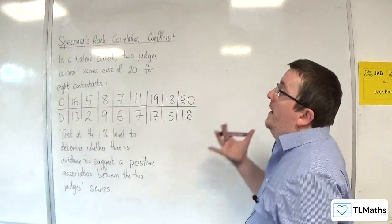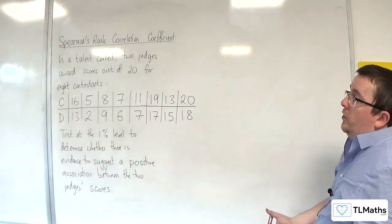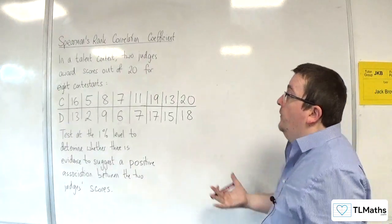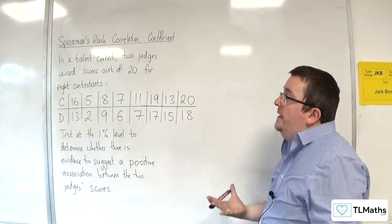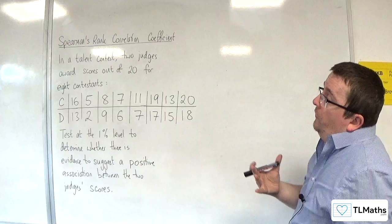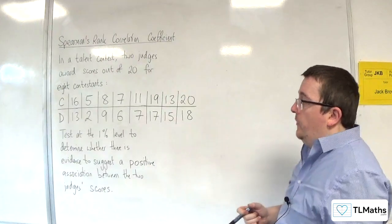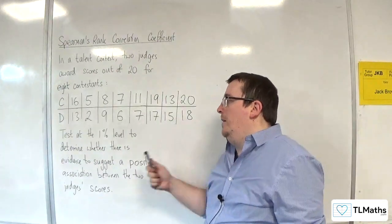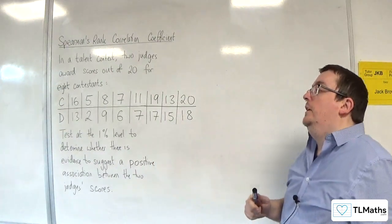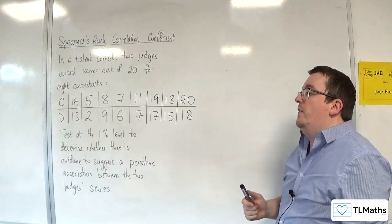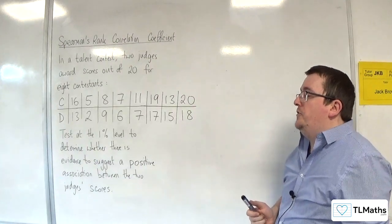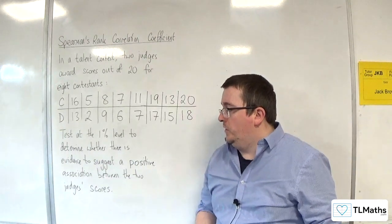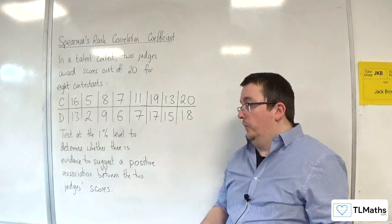So this time we have another talent contest where we've got two more judges, C and D. They're awarding scores out of 20 for eight contestants. We're going to test at the 1% level to determine whether there is evidence to suggest a positive association between the two judges' scores.